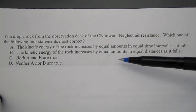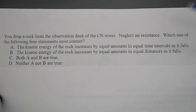C is that both A and B are true, and D is neither A nor B is true.